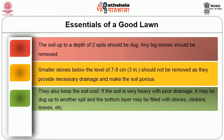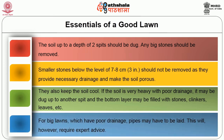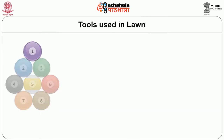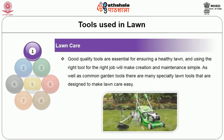If the soil is very heavy with poor drainage, it may be dug up to another spit and the bottom layer may be filled with stones, clinkers, leaves, etc. For big lawns which have poor drainage, pipes may have to be laid. This will however require expert advice. Then tools used in lawn care.